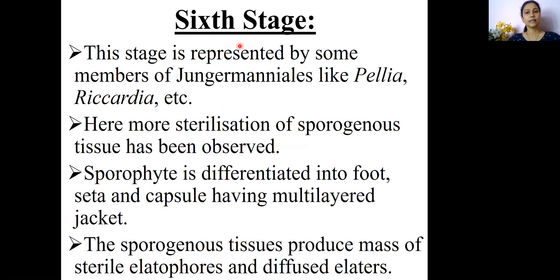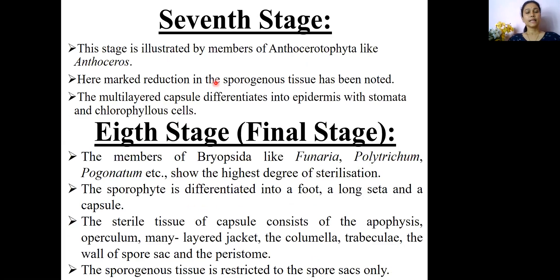The sixth stage can be seen in many Jungermanniales like Palia, Porella, Riccardia, etc. Here the sporophyte is differentiated into foot, seta, and capsule, and the capsule also has a multi-layered jacket, compared to the single-layer jacket in Riccia or Marchantia. The seventh stage is represented by the genus Anthoceros within Anthocerotophyta.